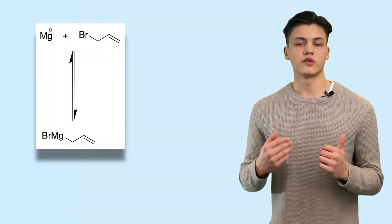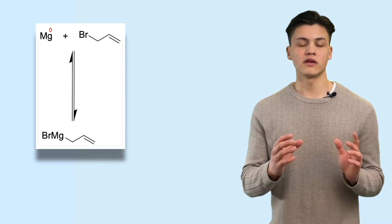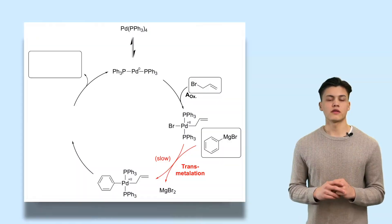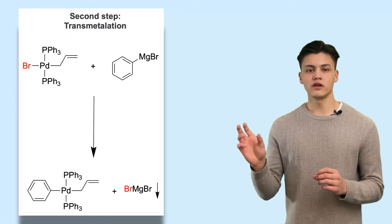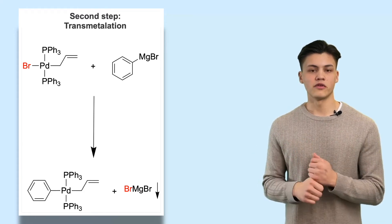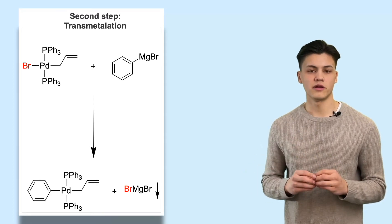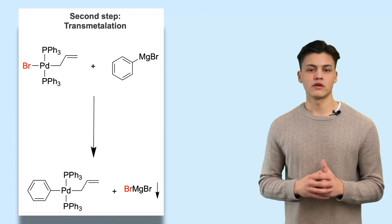You can think of this like making a Grignard reagent — you use an organic halide and magnesium, which inserts between the carbon and the halide. As an intermediate in our cycle we have this palladium(II) complex, which now undergoes transmetalation. In the transmetalation we use our nucleophile, a Grignard reagent. Two ligands change the metal they are bonded to: a phenyl group moves from magnesium to palladium, while the bromide ligand bonds to magnesium bromide, which can precipitate.